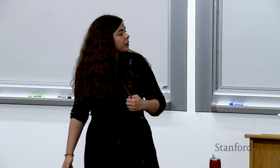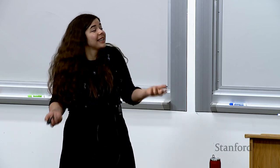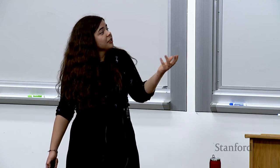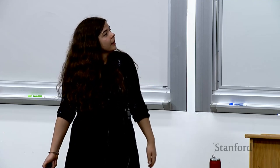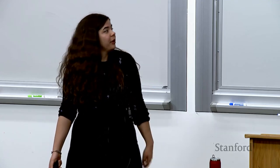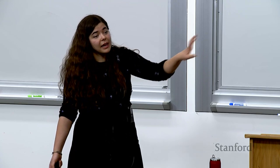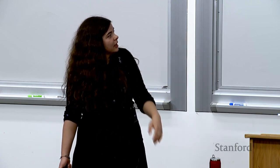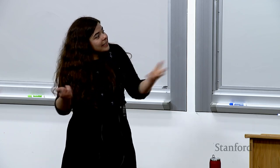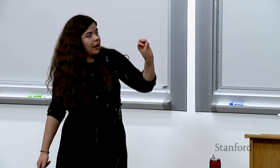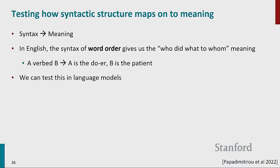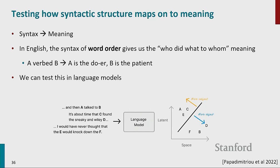Another thing we could do is test how syntactic structure maps onto meaning and role. In English, the syntax of word order gives us the 'who did what to whom' meaning. For any combination like 'A verb B,' A is the doer and B is the patient. We can ask: is this relationship strictly represented in English language models as it is in the English language? We can take things appearing in subject position, things appearing in object position, take their latent space representations, and learn a little linear classifier. The more on one side you are, the more subject you are; the more on the other side, the more object you are.